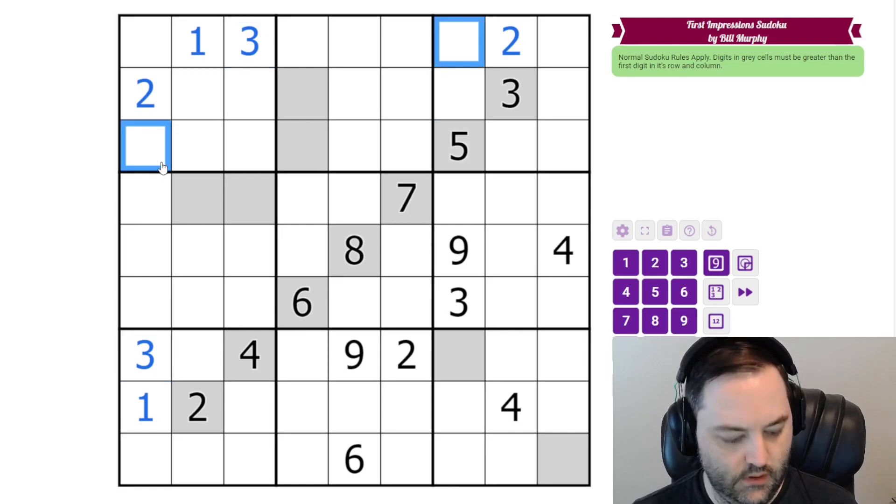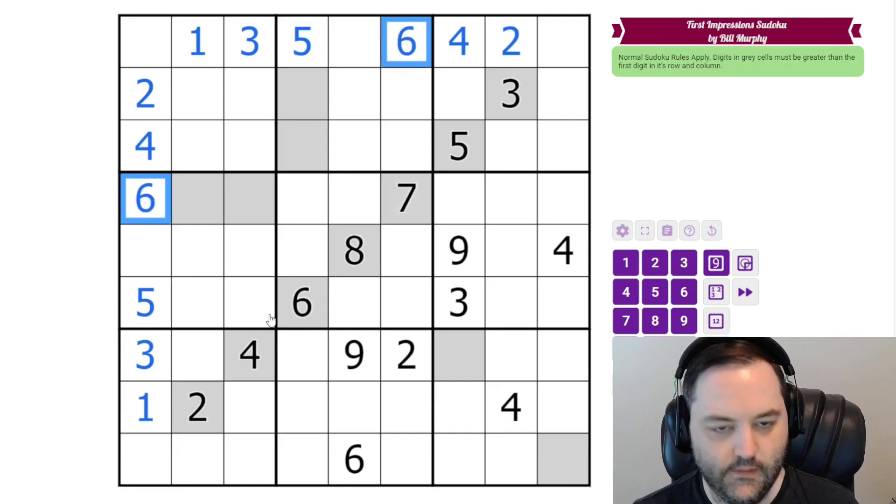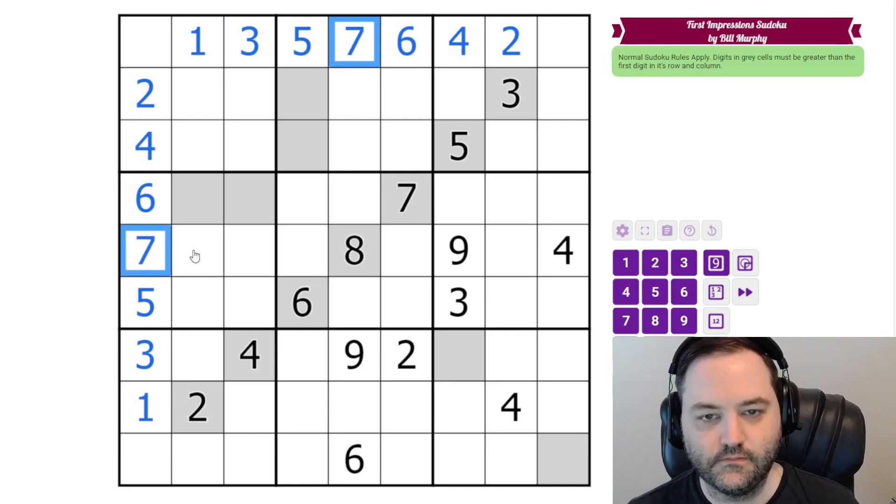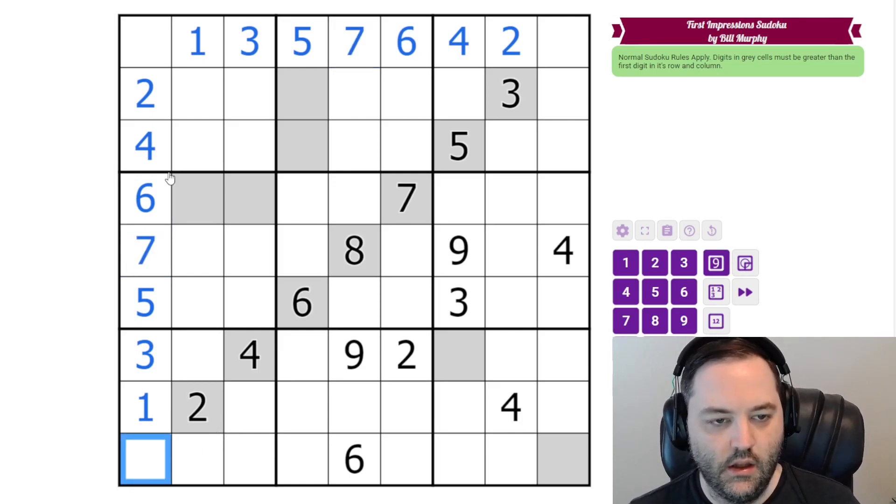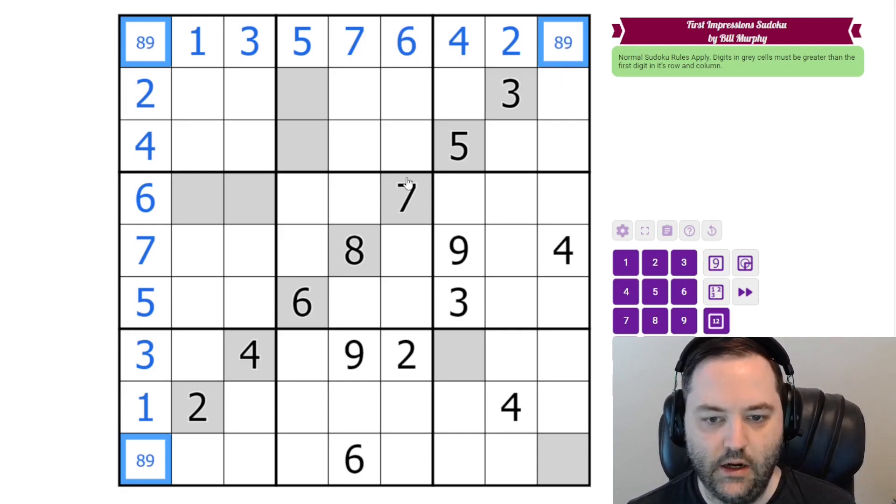This 5 gives us 4s. This 6 gives us 5s. The 7 gives us 6s. The 8 gives us 7s. And now in the first row in column, all we are left with is an 8, 9 pair, and 2. And we can't resolve those yet.